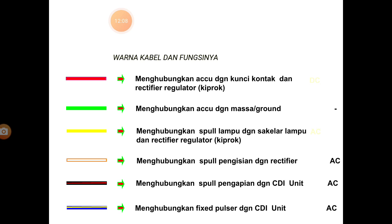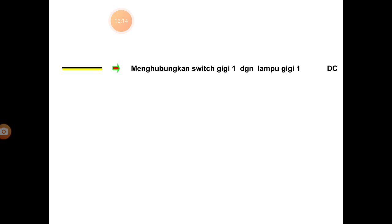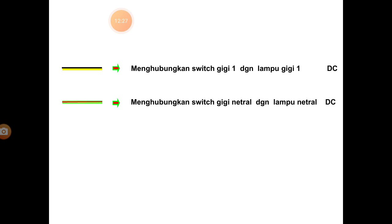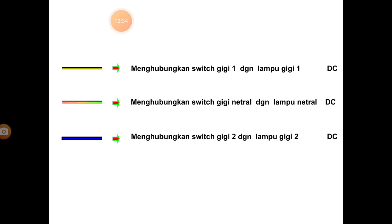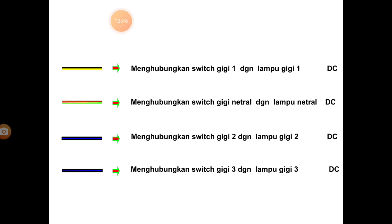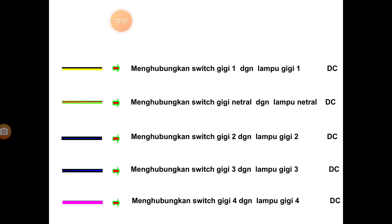Kalau kalian pegang akan terkejut. Selanjutnya, kuning strip hitam menghubungkan di switch gigi satu dengan lampu gigi satu. Hijau strip oranye menghubungkan switch gigi netral dengan lampu netral. Biru strip hitam menghubungkan switch gigi dua dengan lampu gigi dua — ini harusnya DC. Biru strip hitam menghubungkan switch gigi tiga ke gigi tiga. Pink menghubungkan switch gigi empat dengan lampu gigi empat. Ini harusnya DC semuanya.